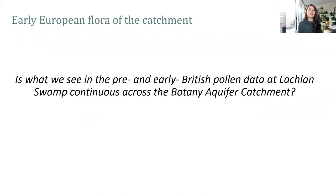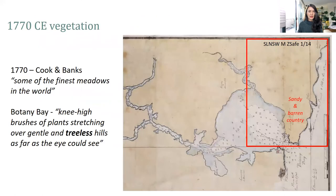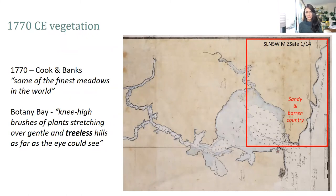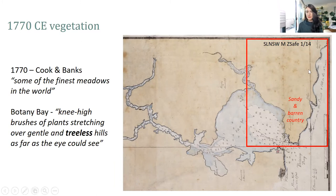We know from this reconstruction that Sydney's freshwater swamplands were very extensive in southern Sydney in the past, comprising around 11 square kilometres. While urbanisation has fragmented flow pathways, the protected sites at Lachlan Swamp and Botany Swamps preserve the integrity of the original pre- and early British swamplands quite well. The next question was whether what we see in the pollen data at the Lachlan Swamp site is continuous across South Sydney more broadly. For the early European period, we draw on written descriptions: Cooks described some of the finest meadows in the world, while Banks described knee-high rushes of plants stretching over gentle and importantly treeless hills as far as the eye could see, with map annotations describing southern Sydney as sandy barren country.